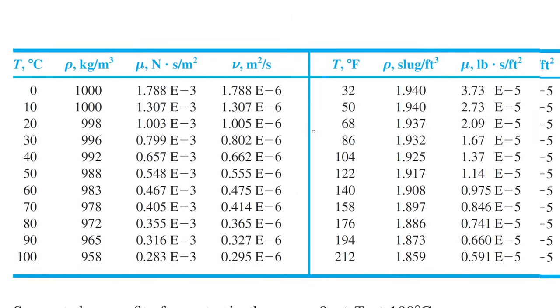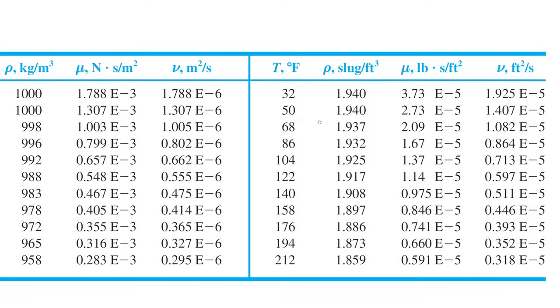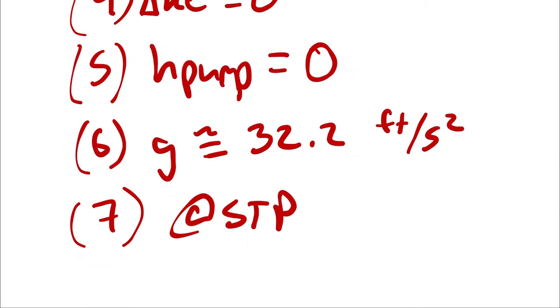20 degrees Celsius or 68 degrees Fahrenheit is going to give us the density for water. This is table A1, by the way, of 1.937 slugs per cubic foot. So I will jump back into the iPad